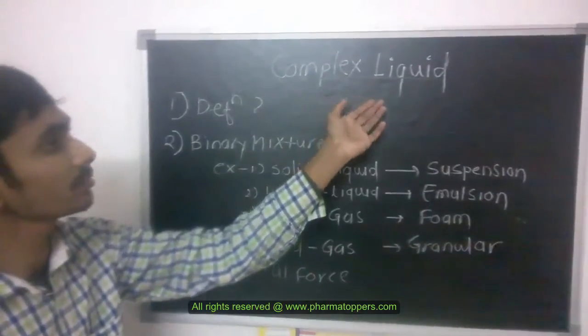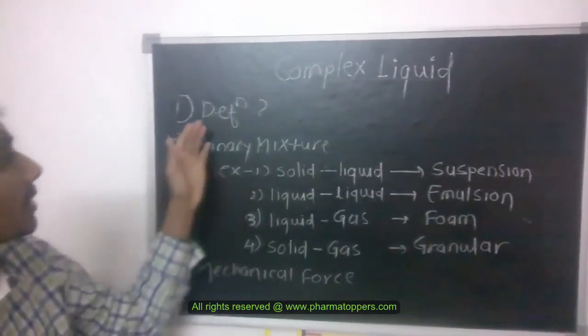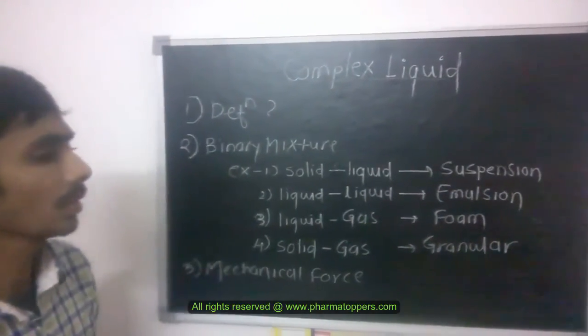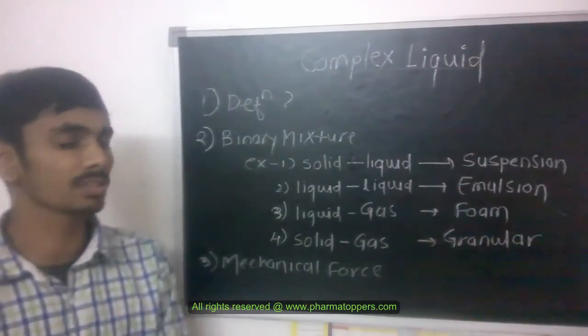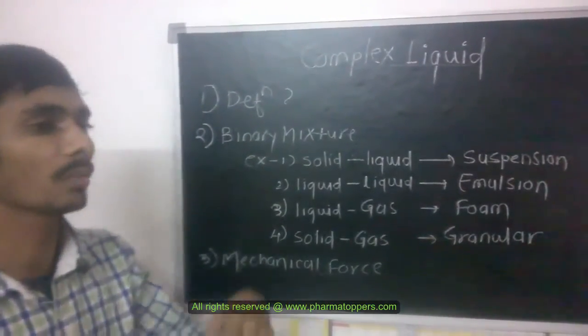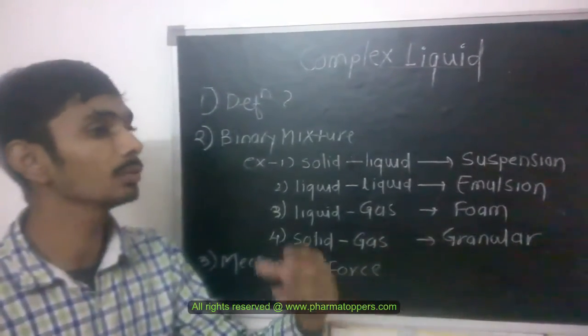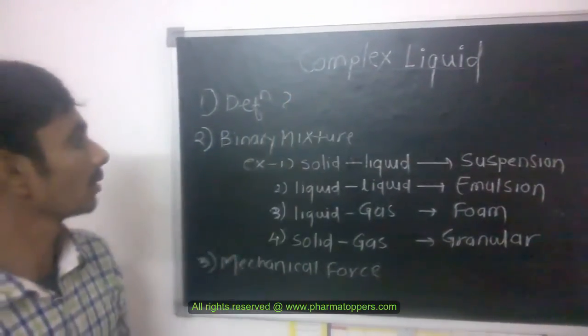Now, we are going to see what is complex liquid. First, we will see the definition of complex liquid. Complex liquid is the mixture of a binary system, or mixture of two components that form a new thing or new phase. This is called complex liquid.